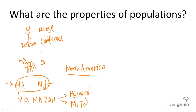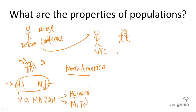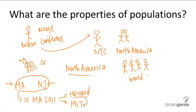You can apply this to the population of humans as well. The population of humans in New York City is one example. You could also have the population of humans in North America, which would incorporate all the humans in New York City and all other cities and places in North America. You could also have the population of humans of the world — all the humans that live on this earth at this moment, so world in 2011.